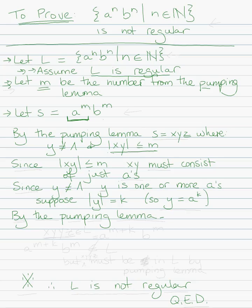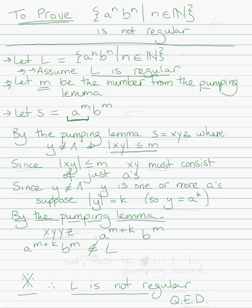By the pumping lemma, let's try and pump that string. A good way to pump it is to try x, y, y, z. So x, y, y, z equals a bunch of a's and then a bunch of b's. How many a's? It's going to be a to the m plus another k, because we added y more a's. So we have a to the m plus k, b to the m. But a to the m plus k, b to the m is not an element of L. We have a contradiction, so L is not regular, QED.